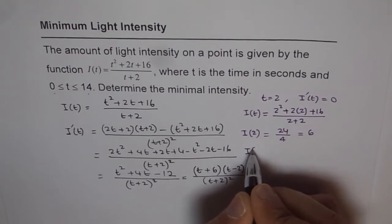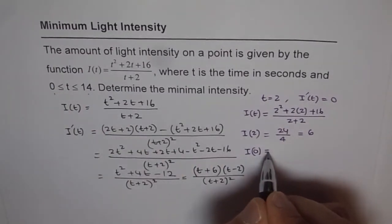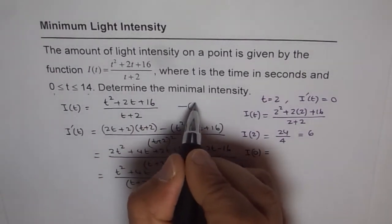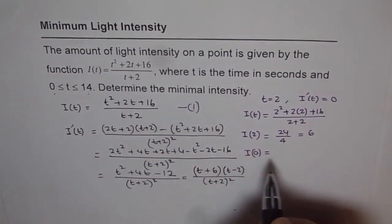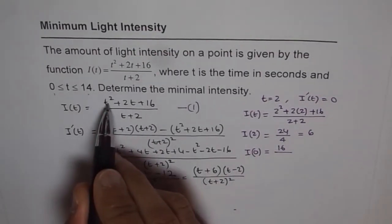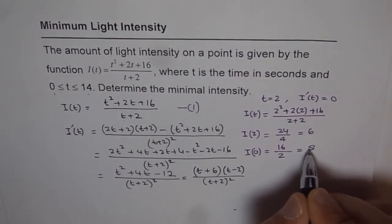Now let us check the intensity when t is 0 and 14, that is the boundary conditions. So if I put 0 here in this expression, so this is the expression which I am working on. So 0 gives me 16 on top because this is 0, this is 0, this is 0 and 2 in the denominator and that gives me 8.